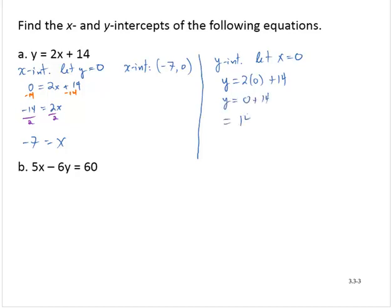which is 14. And so then as an ordered pair, the y-intercept would be 0, 14.